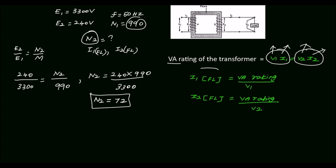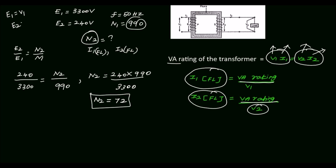From this we can calculate I1 full load, the primary full load current, which is equal to the VA rating of the transformer divided by V1. Likewise, the secondary full load current I2 is equal to the VA rating of the transformer divided by V2. For an ideal transformer, E1 equals V1 and E2 equals V2.